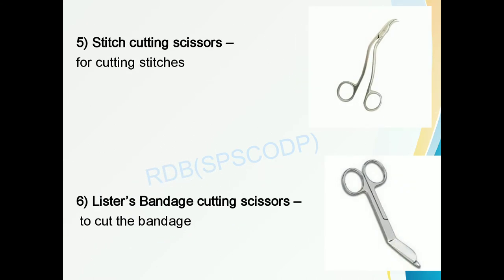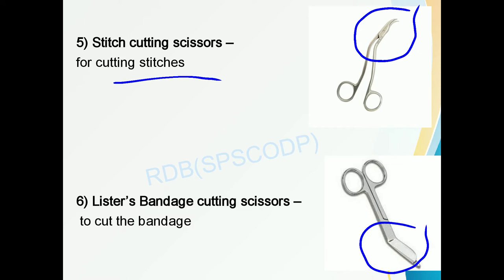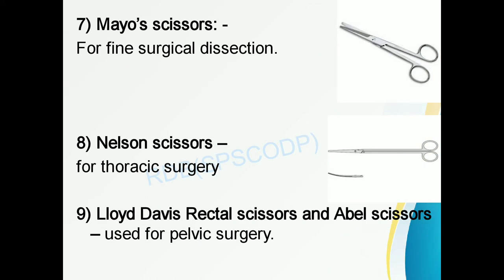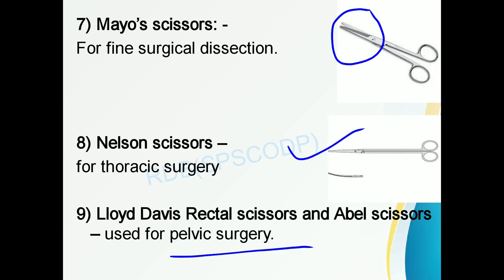The fifth type is the stitch cutting scissors, used to cut stitches. Next is the Lister bandage cutting scissor, used to cut bandages. Then the Mayo scissor is used for fine surgical dissection. Nelson scissor is used for thoracic surgeries, and Lloyd Davis rectal scissor and Abel scissor are used for pelvic surgery.